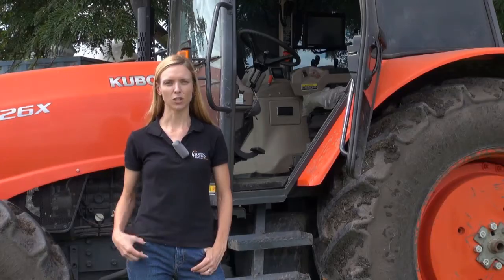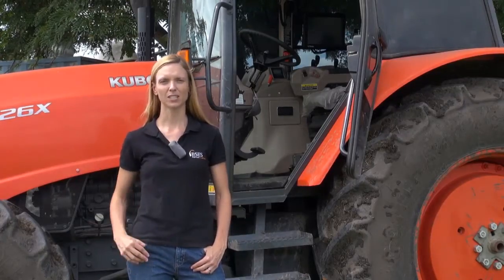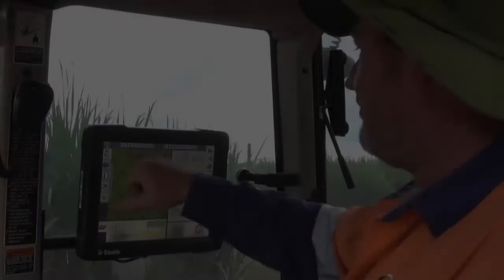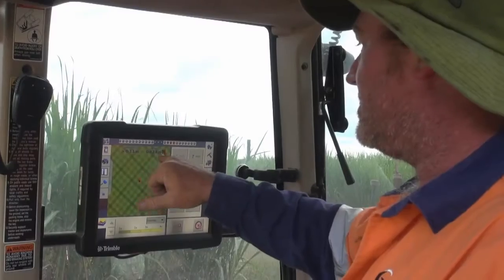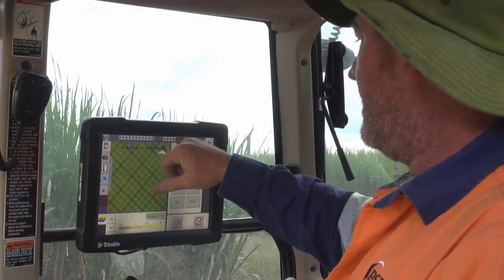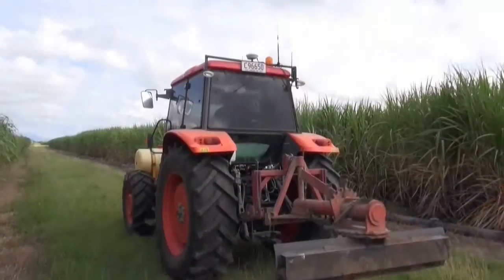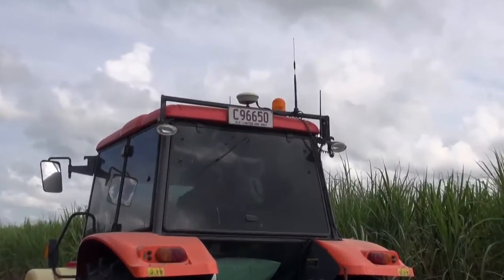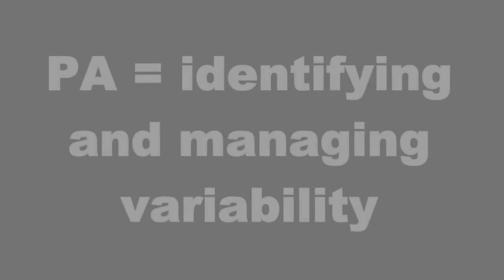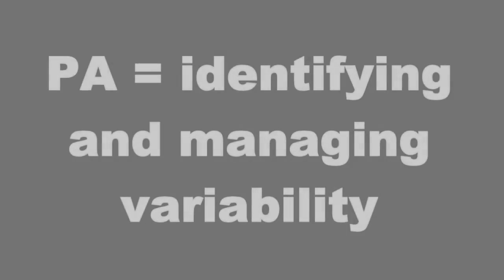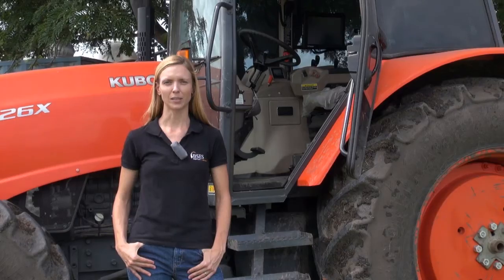But what exactly is Precision Ag? Is GPS Precision Agriculture? If you drive a tractor like this with AutoSteer, does that mean that you're doing Precision Ag? Well, while these are useful tools, using GPS on its own or AutoSteer is not Precision Ag. Precision Agriculture involves identifying the variability on your farm and variability in productivity, and managing for that variability.